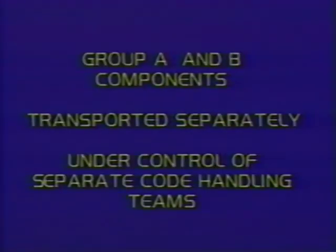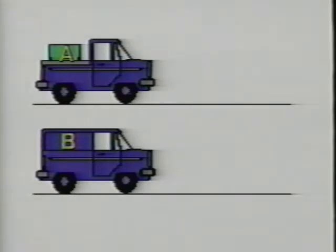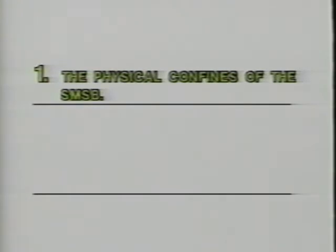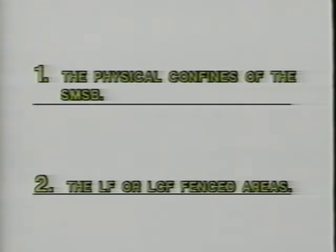Transport procedures. Operationally effective group A and B code components must be transported separately and under the control of separate code handling teams of the same control group as that of the component. In addition, if the components are complementary to each other, they must have a minimum of 30-minute separation when outside the physical confines of the Strategic Missile Support Base, SMSB, and the Launch Facility, LF, or Launch Control Facility, LCF.